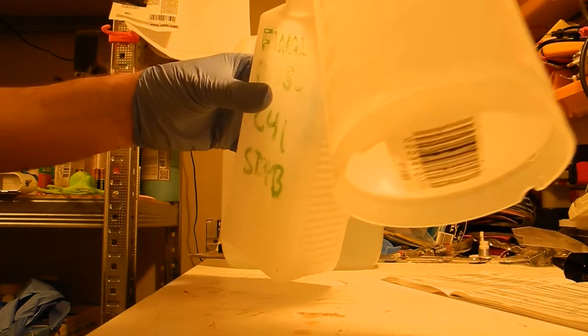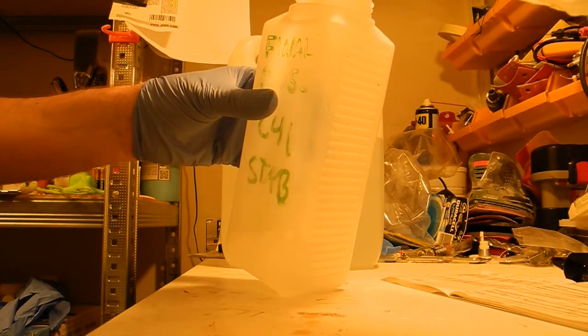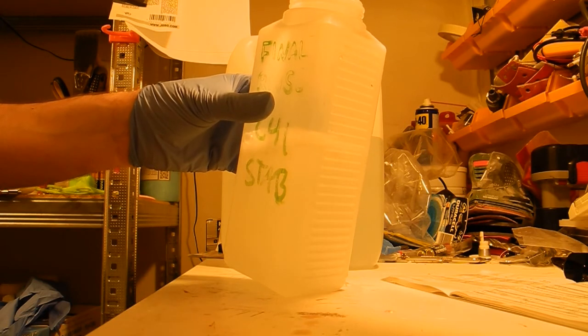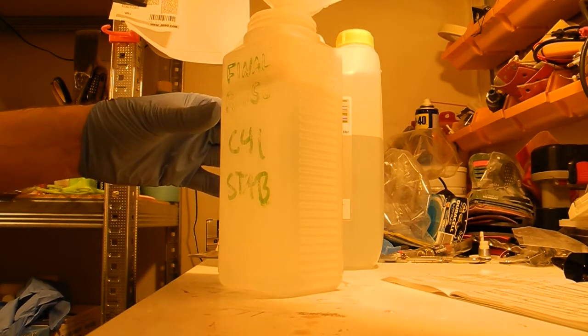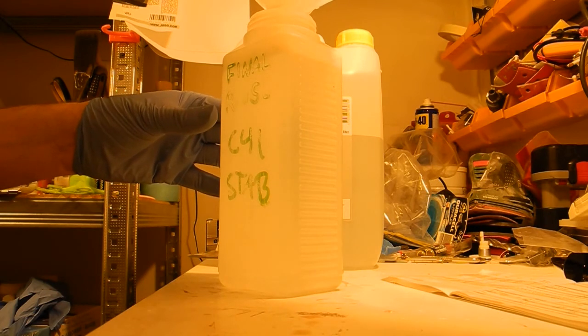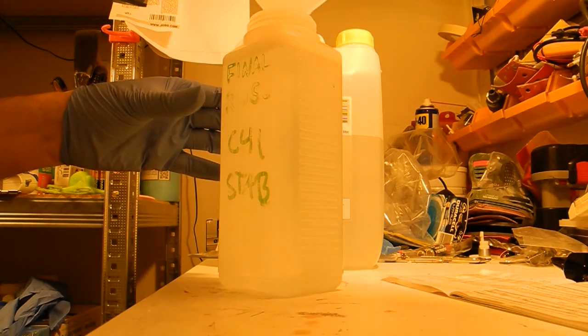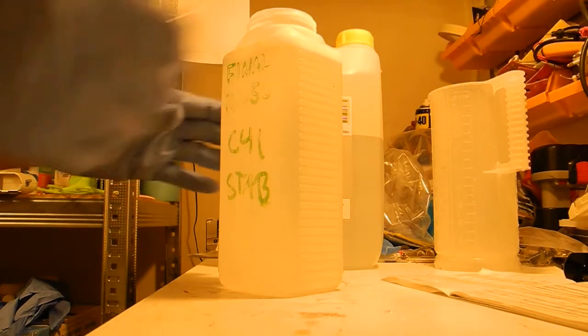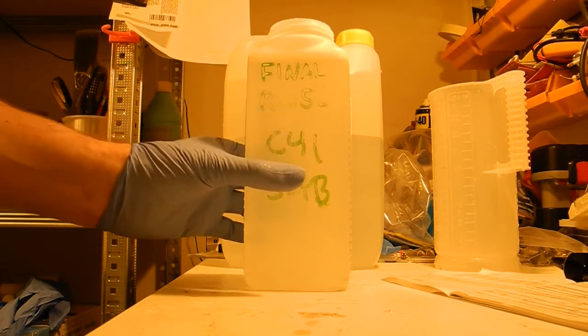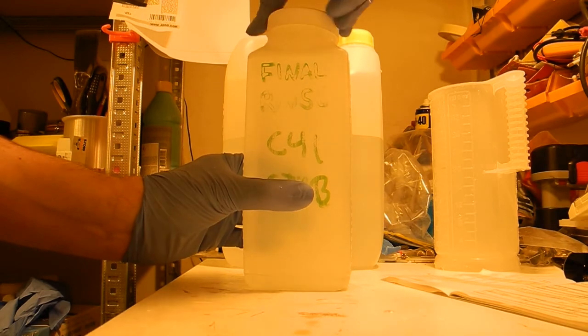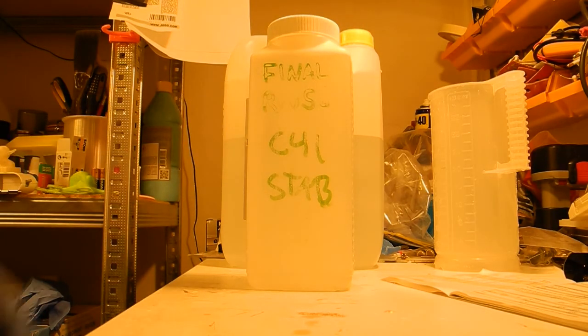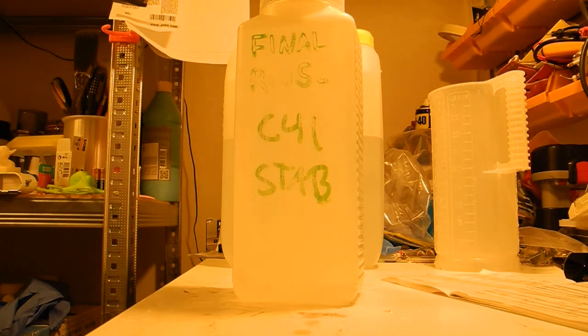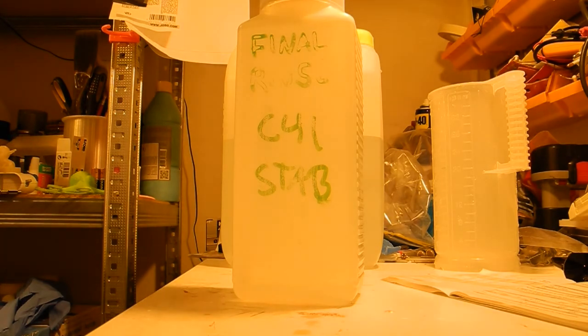The main thing is getting the temperature right. And I use a Jobo machine, because I'm lazy and I get a little bit stressed about watching a thermometer all the time when I'm doing darkroom work. So I was lucky enough to get a used Jobo off eBay. But yeah, it could probably work in just a sink with a nice thermometer. So yeah, it's fun and easy.